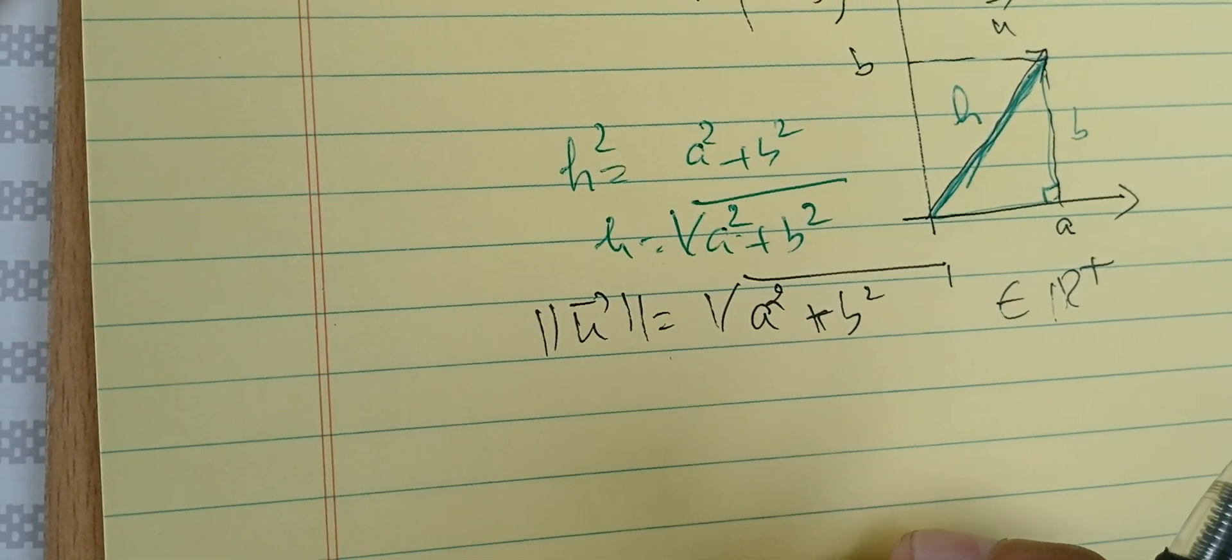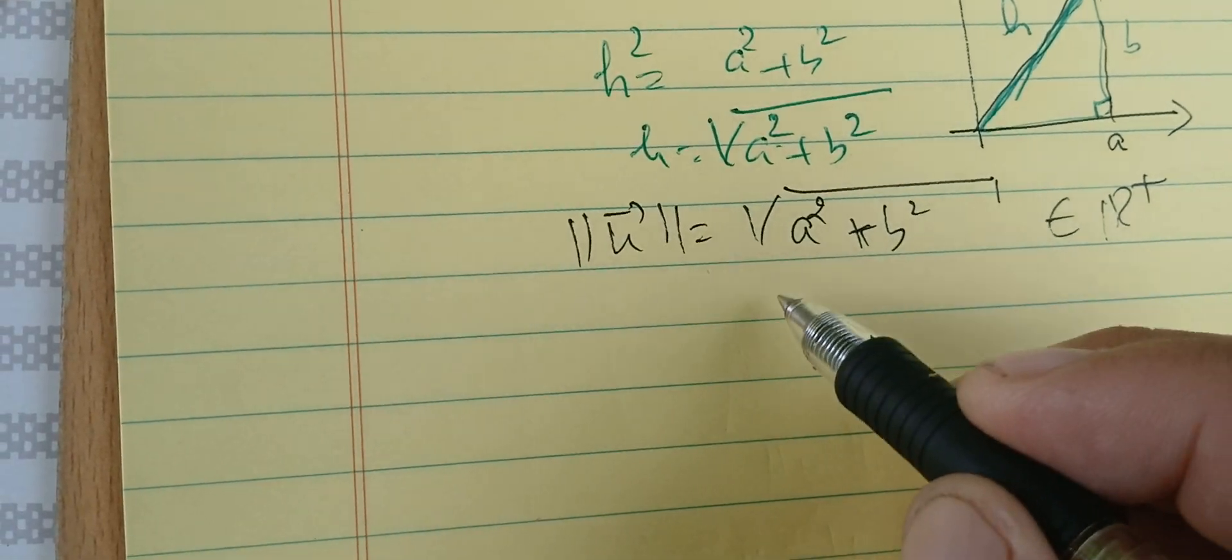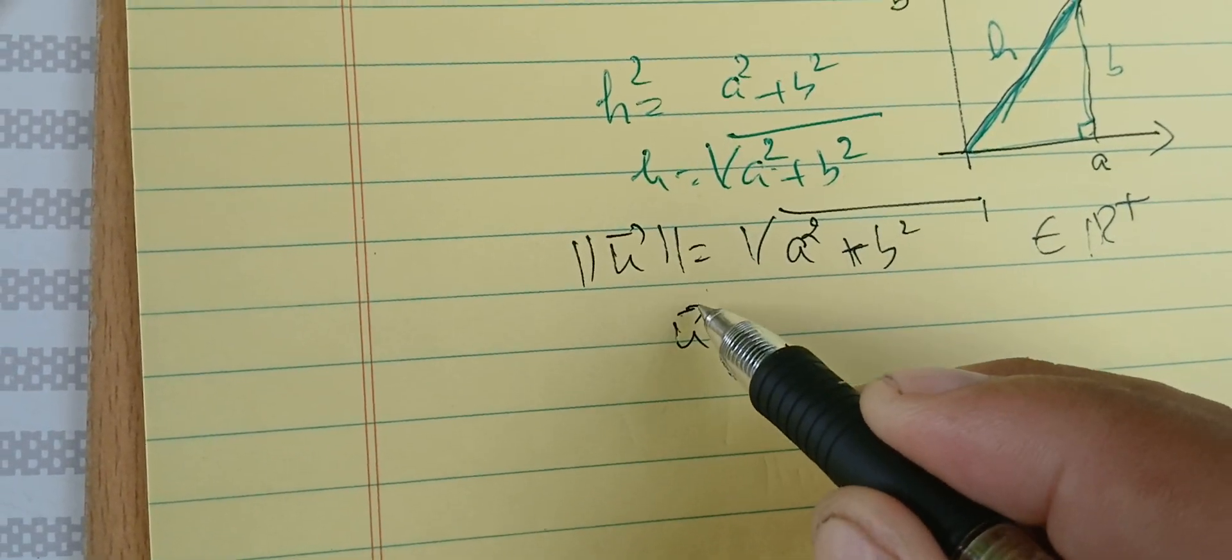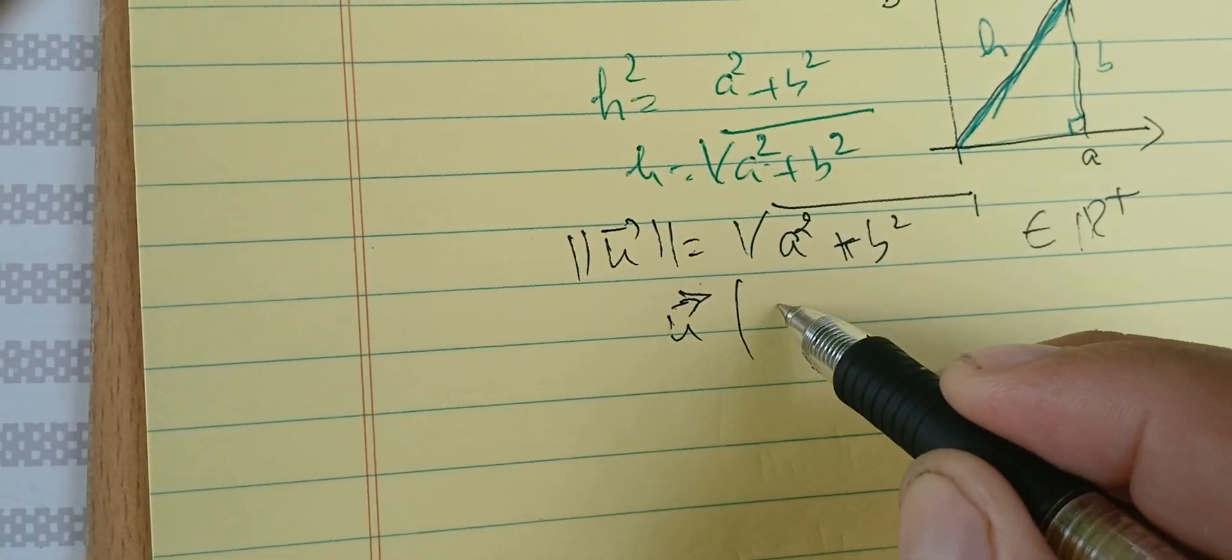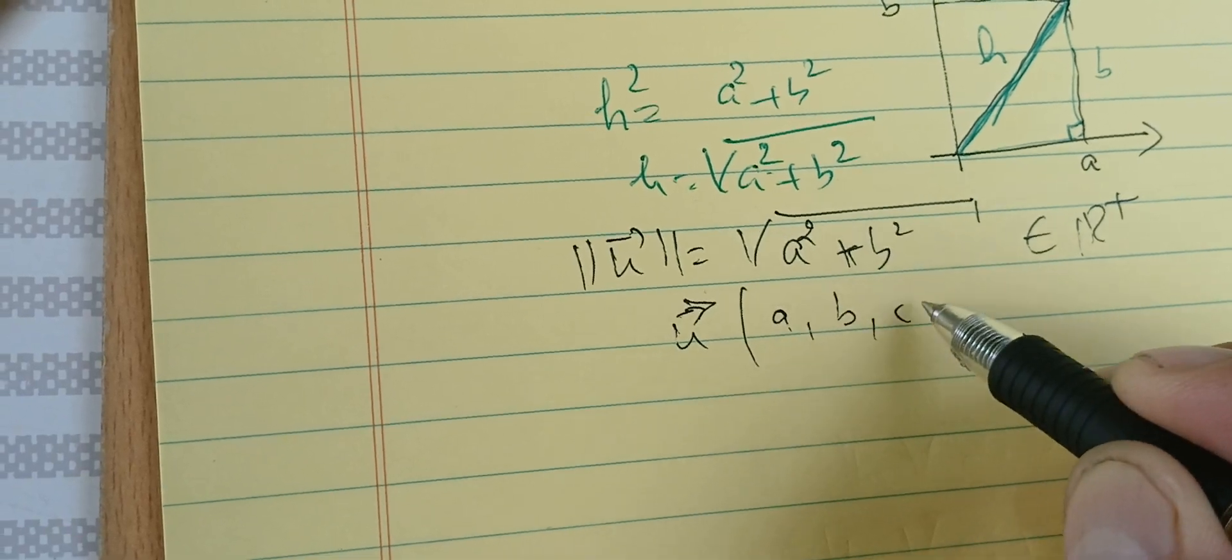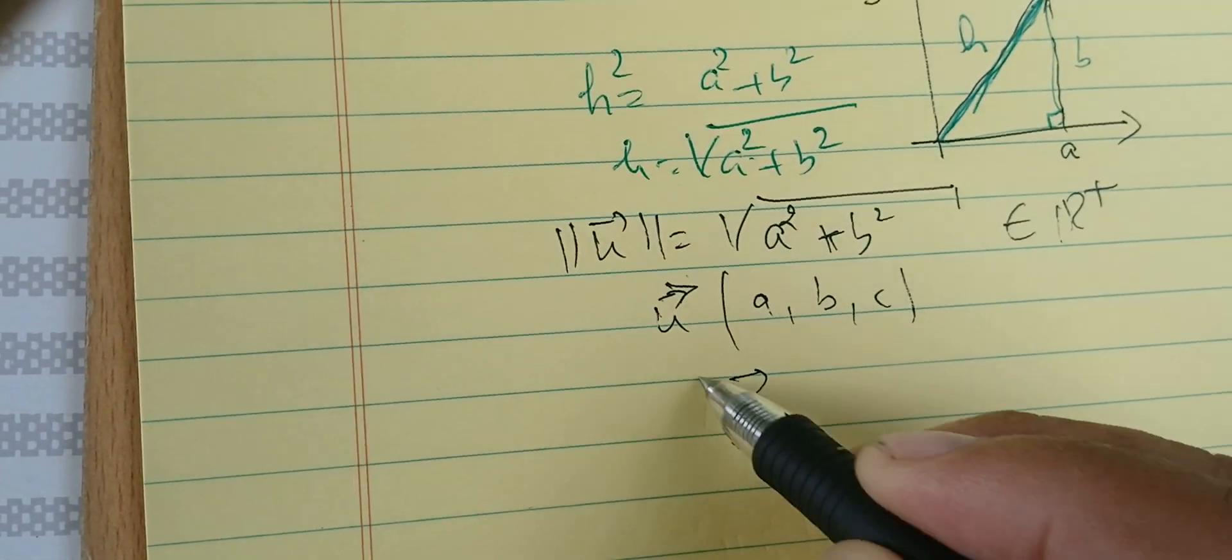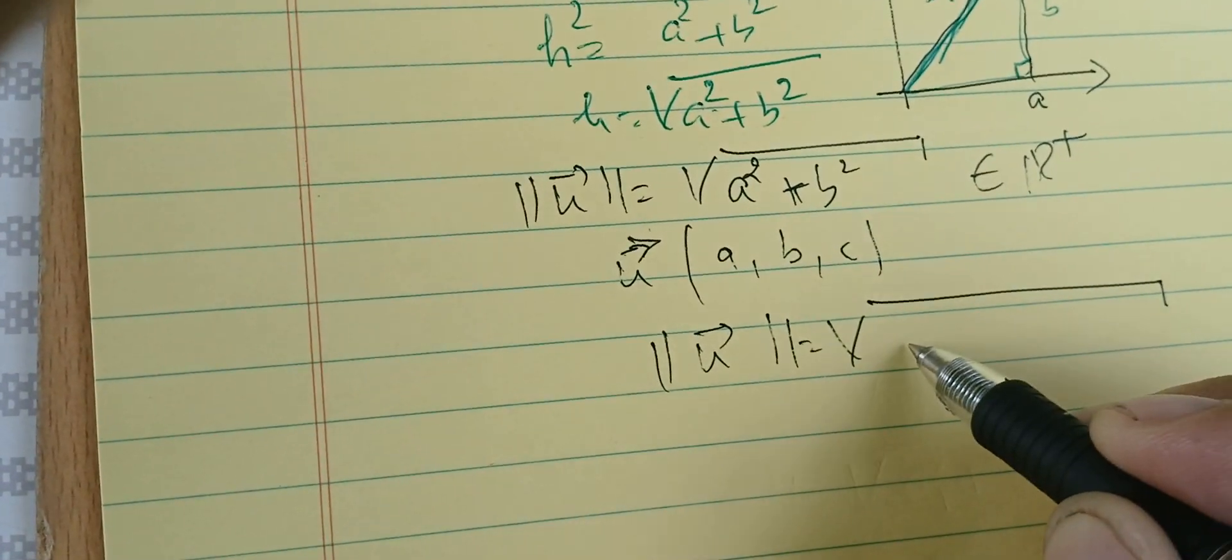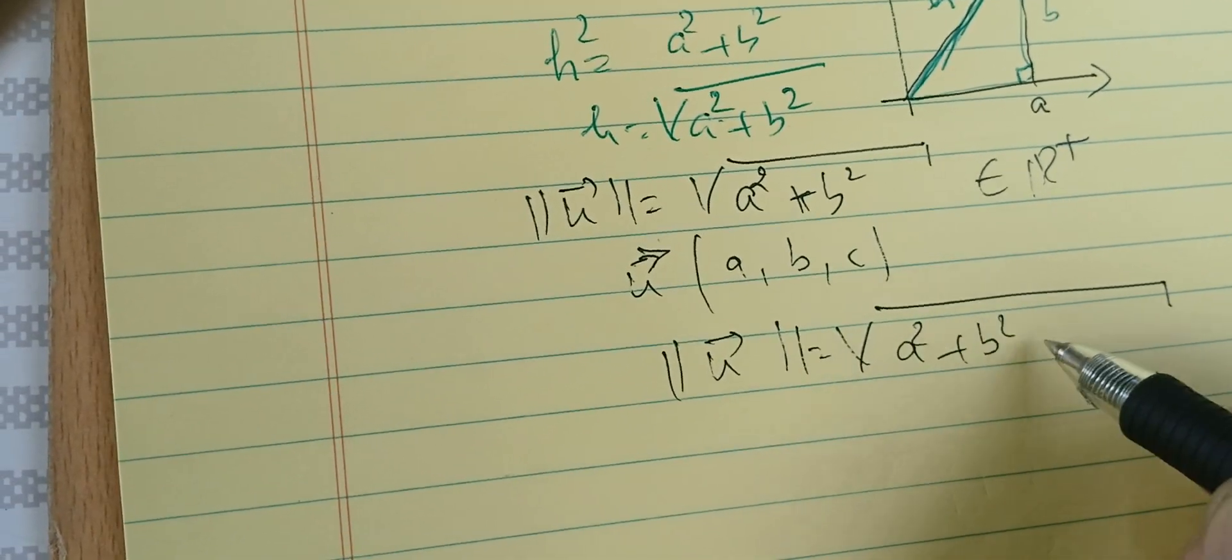I can extend this definition. If I have a vector in 3D that has coordinates a, b, c, the norm in this case is going to be the square root of a² + b² + c².